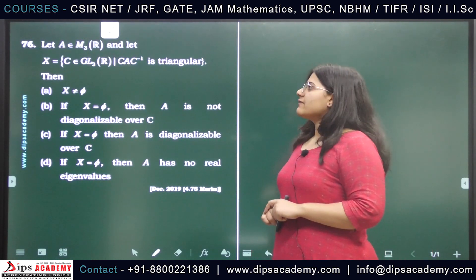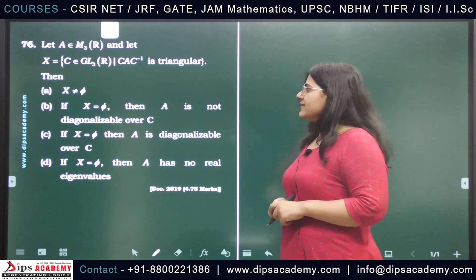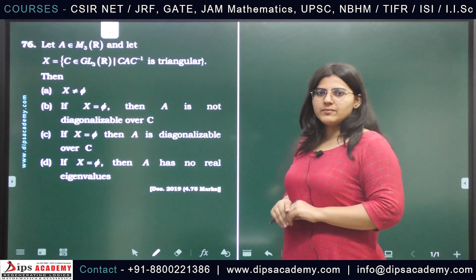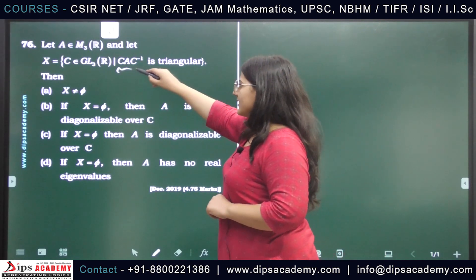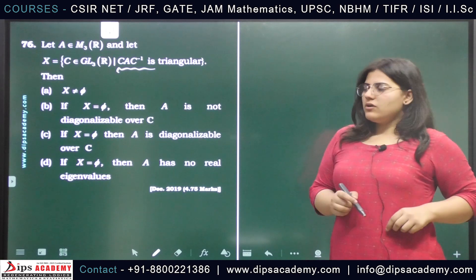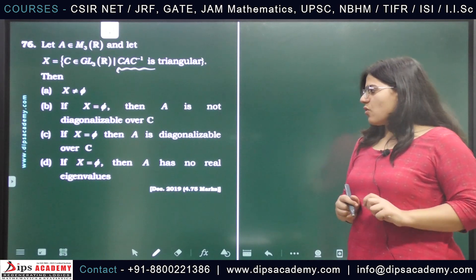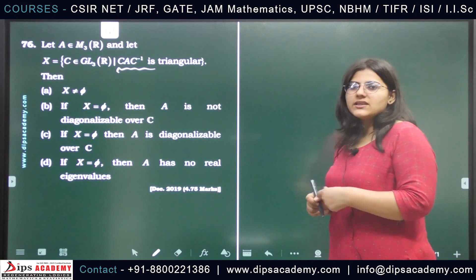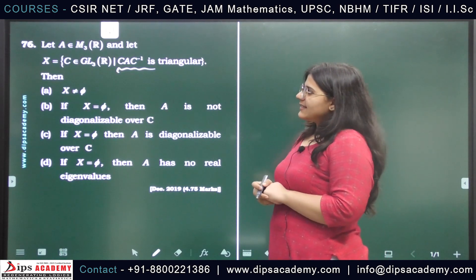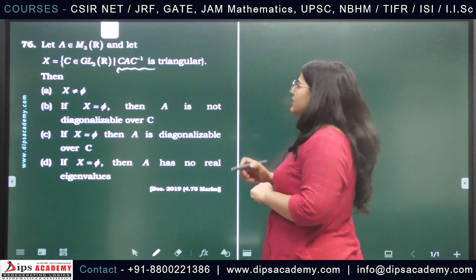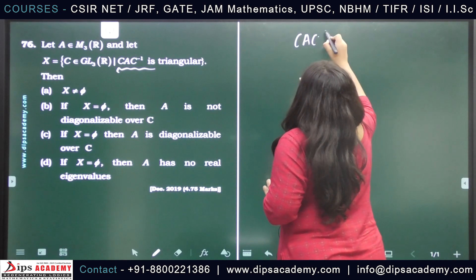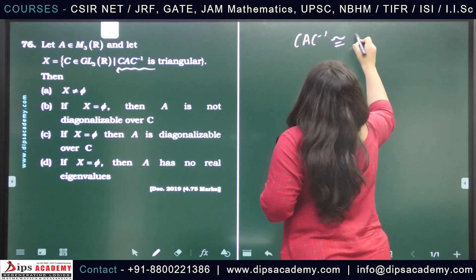In this question we have given a 3×3 real matrix A, and X is the collection of all those invertible matrices C such that CAC⁻¹ is triangular. We should note that CAC⁻¹ is similar to A, so this question is about when A can be made triangular via similarity.